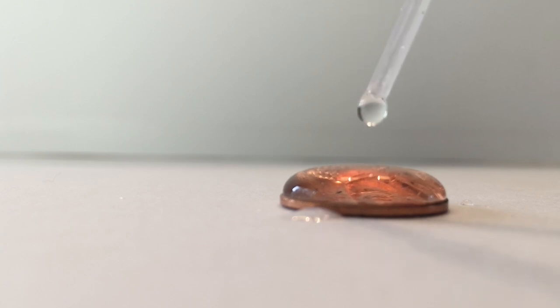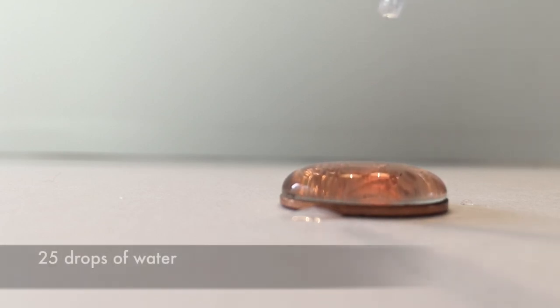The cohesion and the surface tension of the water becomes apparent when the drops of water you add to the penny reach the edge of the penny. Once the water has reached the edge, you begin to see a bubble or dome of water forming on top of the penny as seen here. The bubble shape is a result of the water molecules clinging to one another in an optimal shape.